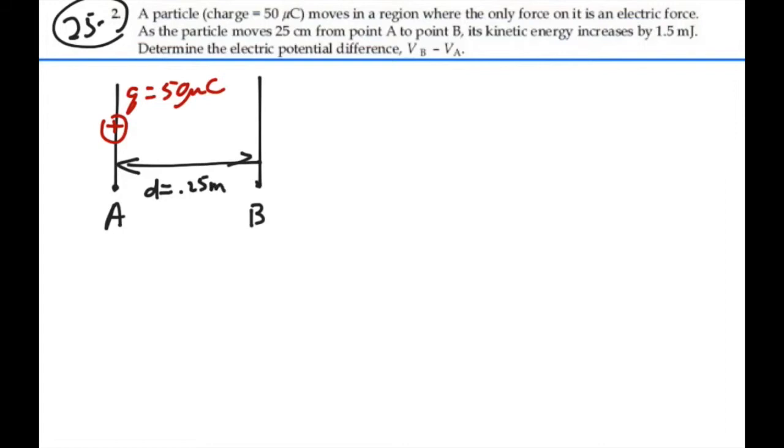We're also told that its kinetic energy increases by 1.5 millijoules. Now we don't know what the kinetic energy is at A, but we do know that the change in kinetic energy is 1.5 millijoules. So we can go ahead with that. The change in kinetic energy, which is our final kinetic energy minus our initial kinetic energy, is given as 1.5 millijoules. So we don't actually have to know what the values of those kinetic energies were. We just need the change.